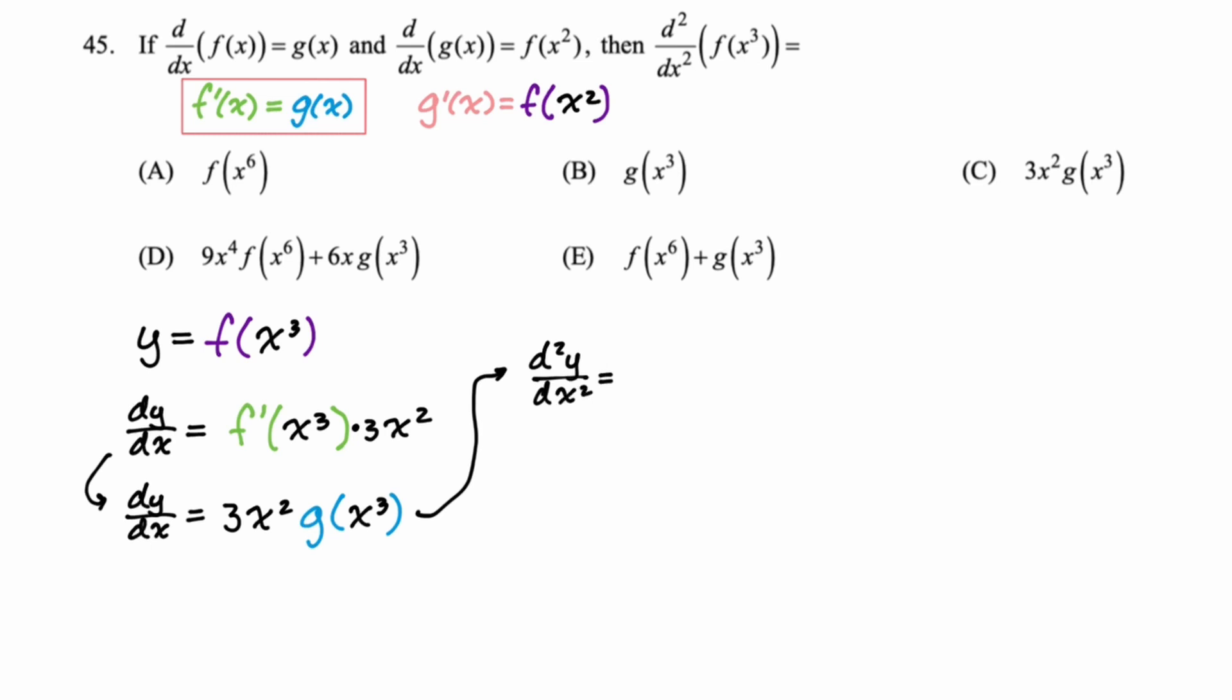So this is just a product rule with a little chain rule thrown in. So it's going to be first, derivative of the second is going to be g'(x³) times 3x², plus second, which is g(x³), derivative of the first, which is 6x. Okay, so we have this. Now at this point, because this is multiple choice, if you look at all the answers, we're done. Because of that 6x right there, the only answer it could possibly be is D, but I'm going to carry on with the problem anyway.